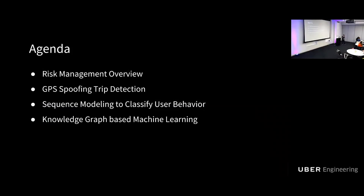I will start with a brief overview of risk management. Then I will dive deeper into three different applications, including GPS spoofing trip detection for fake trips, sequence modeling to classify user behaviors between good and bad users, and the Uber Knowledge Graph machine learning platform.